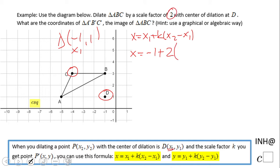x₂ is the x coordinate of the point we're dilating. In our case, that's point C, which has coordinates (-4, 3). So we have x₂ = -4. Plugging in: x = -1 + 2(-4 - (-1)).